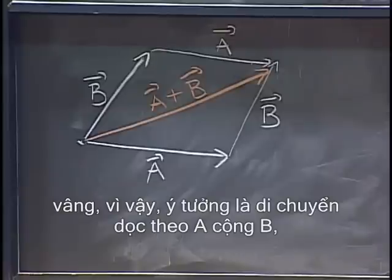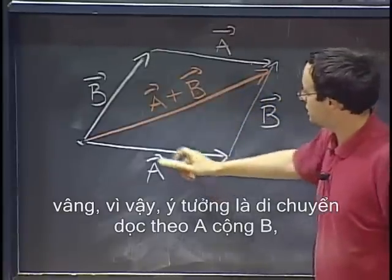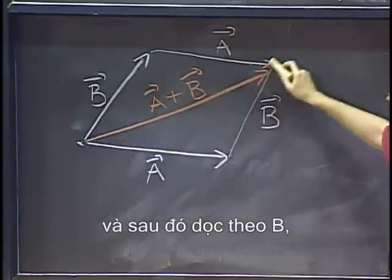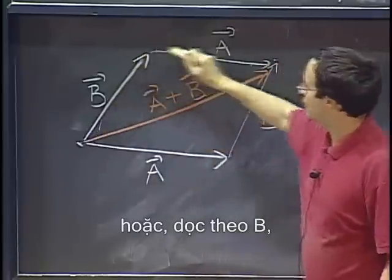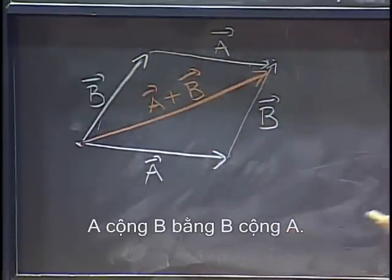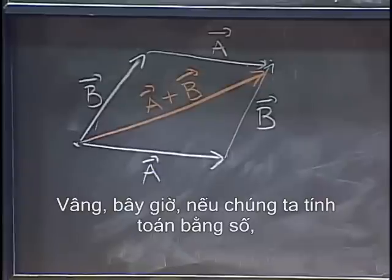OK, so the idea being that to move along a plus b, it's the same as to move first along a and then along b. Or, along b, then along a. A plus b equals b plus a.